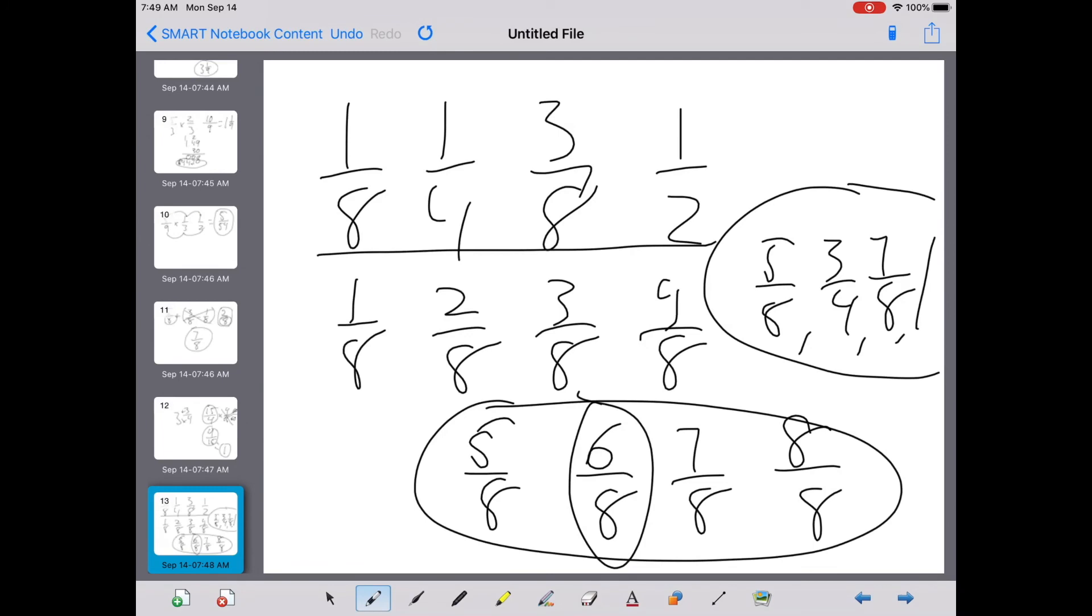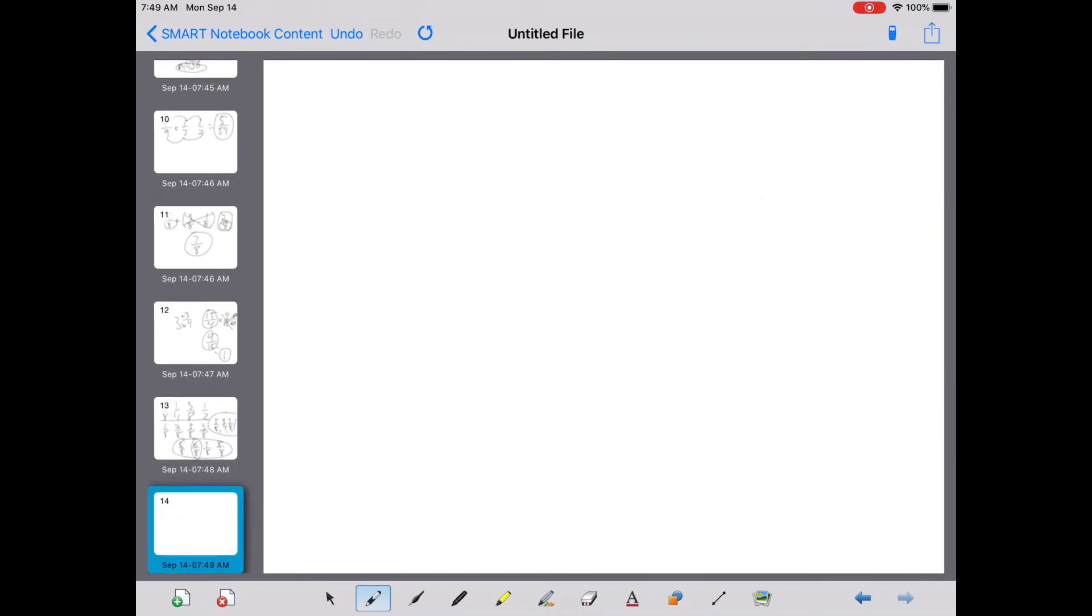And last is number 30. If n divided by m equals seven-eighths, what does m divided by n equal? Well, guys, that is a division problem. n is seven, m is eight. m divided by n. So what is the other way around? Eight divided by seven. Remember, switch the order in division, it's the reciprocal.